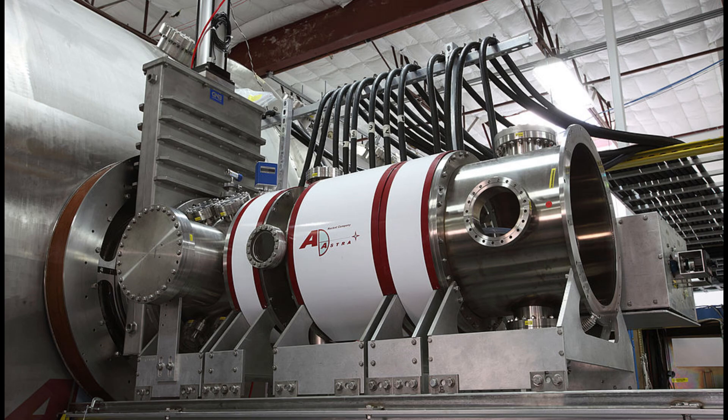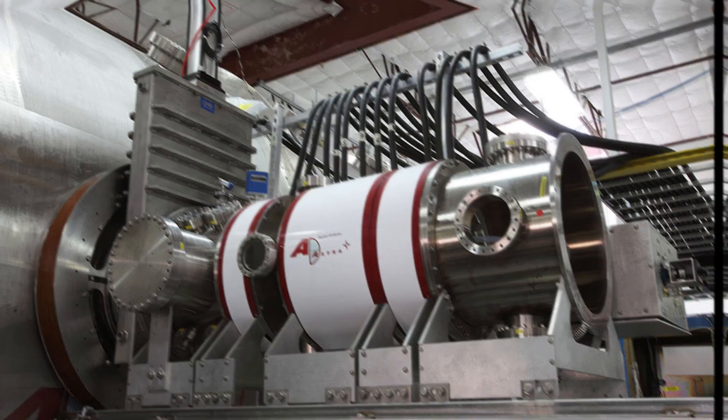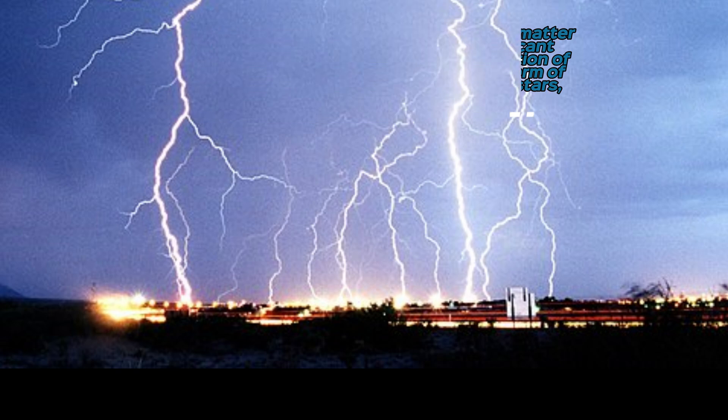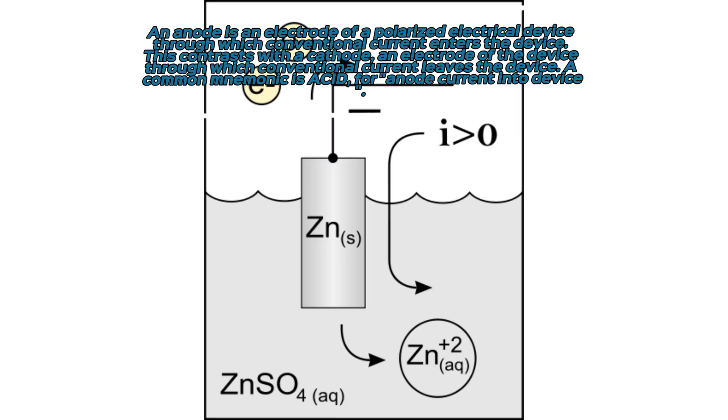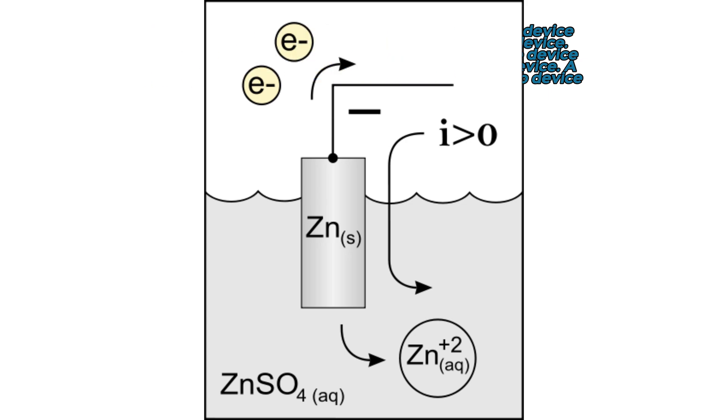A plasma propulsion engine is a type of electric propulsion that generates thrust from a quasi-neutral plasma. This is in contrast with ion thruster engines, which generate thrust through extracting an ion current from the plasma source, which is then accelerated to high velocities using anodes.